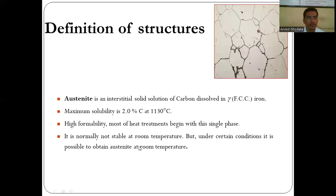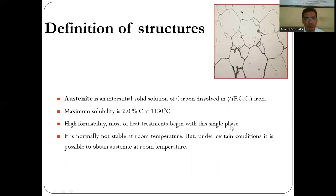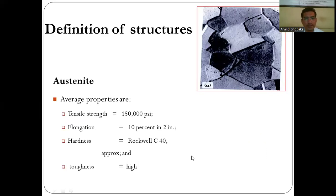Austenite is an interstitial solid solution of carbon dissolved in gamma (FCC) iron. The maximum solubility is 2% carbon at 1,130°C (or 1,147°C). It has high formability, and most heat treatments begin with this single phase. It is normally not stable at room temperature, but under certain conditions austenite can be retained at room temperature. Average properties: tensile strength ~150,000 psi, elongation 10%, Rockwell hardness ~40, and high toughness.